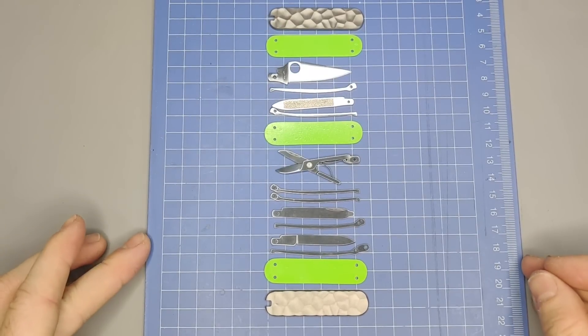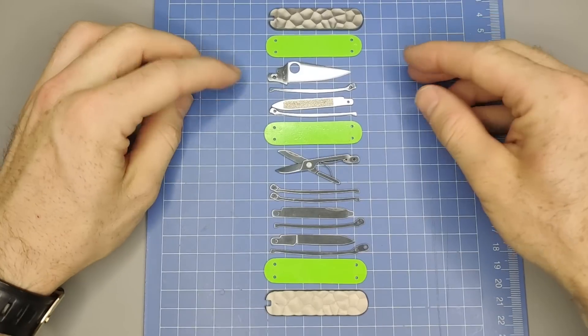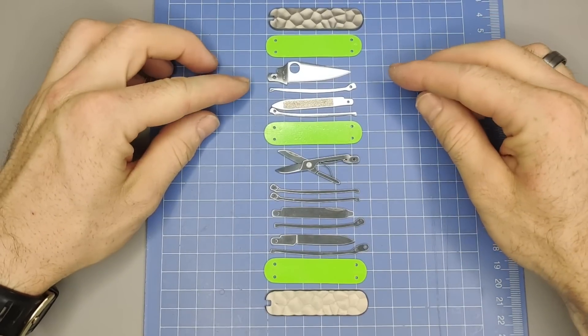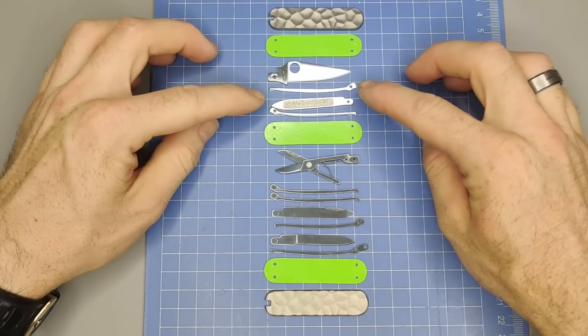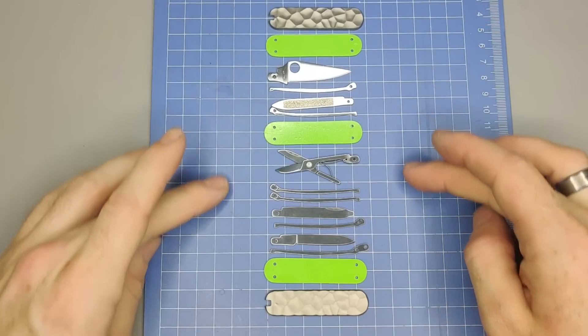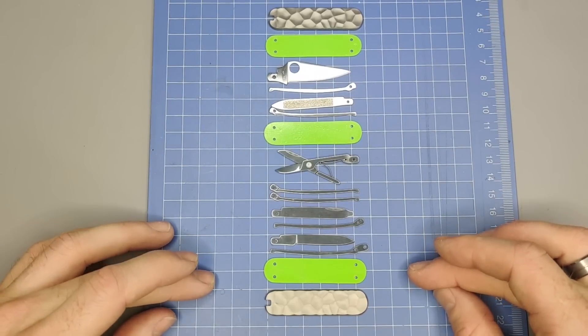Alright, so this is after cleaning them up. And basically I just washed them with some dish soap and hot water. You can see they're all cleaned up. And this is going to be kind of the basic setup plan we're going to have.